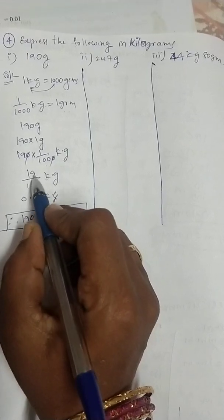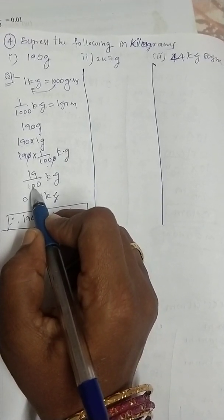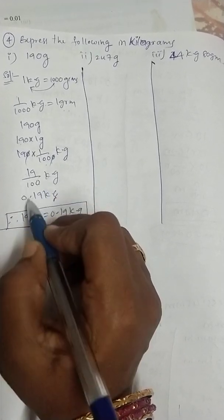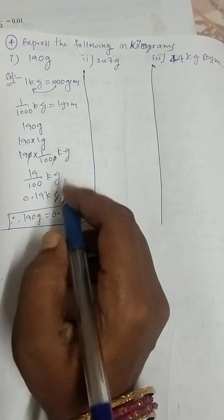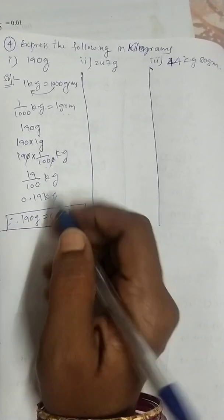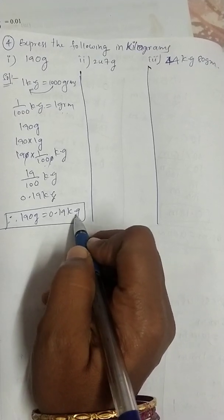We can write this in decimal form. How we can write? Two zeros in the denominator, so you should write 2 digits after decimal point. 1, 2. Two digits after, we should point decimal. So 190 grams is equal to 0.19 kilograms.